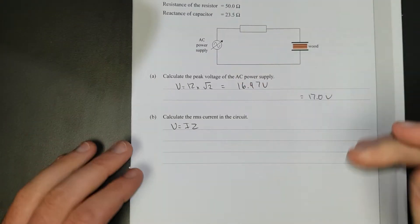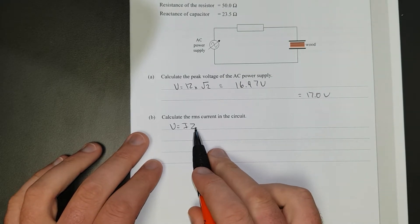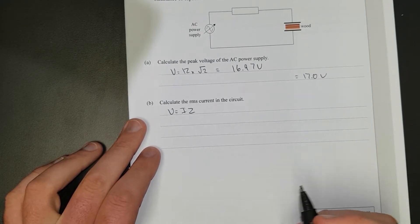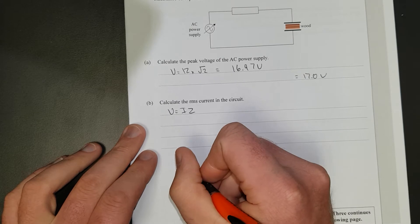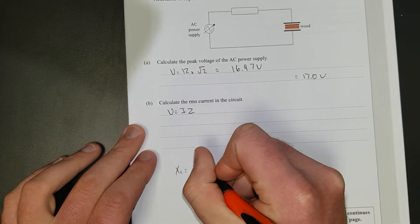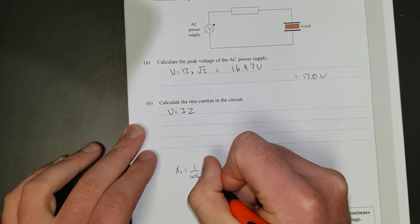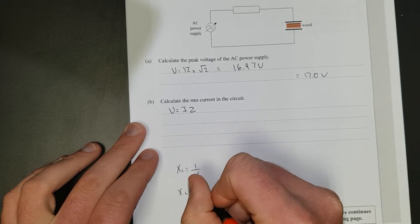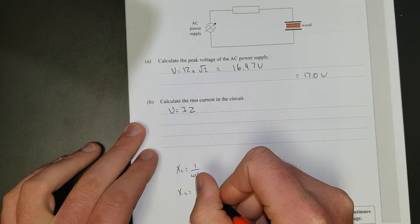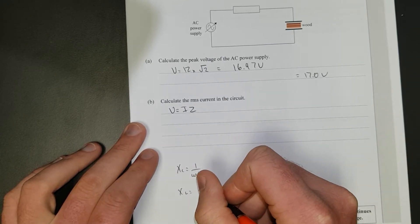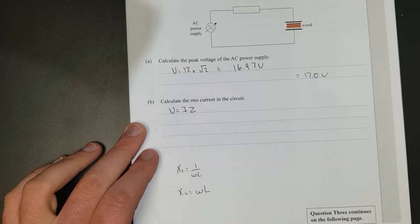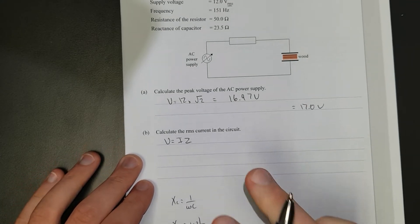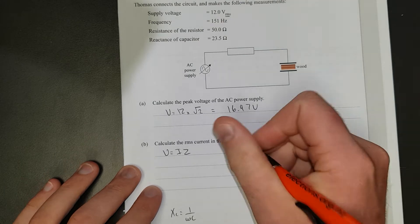Inductors have reactance, capacitors have reactance. The capacitor's reactance XC is equal to 1 over omega C, and then XL for an inductor is omega L. So what we need to do is find out the impedance.